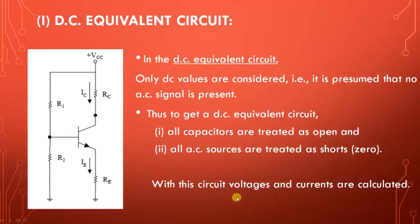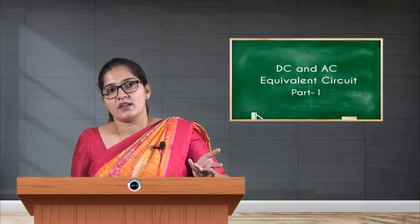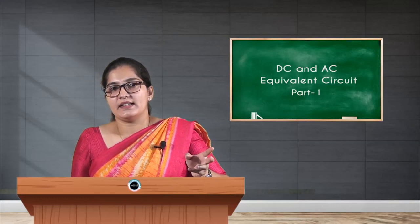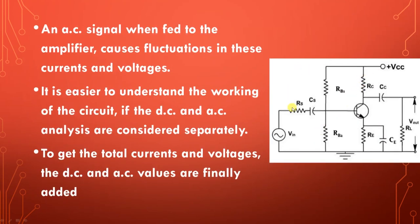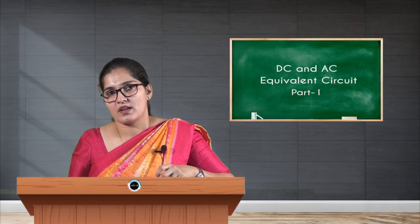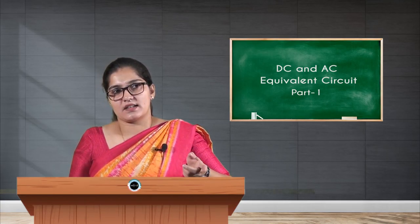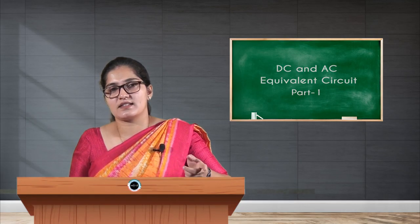With this DC equivalent circuit, the voltages and currents due to only the DC source are calculated. In the next section, we will calculate the currents and voltages due to the AC source, and finally they are combined to obtain the total voltages and currents from both AC and DC sections. That gives the total current and voltage from this CE amplifier circuit. In the next class, we shall see what is the AC equivalent circuit.